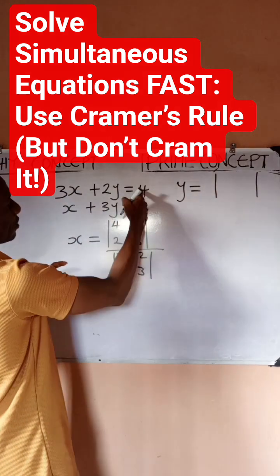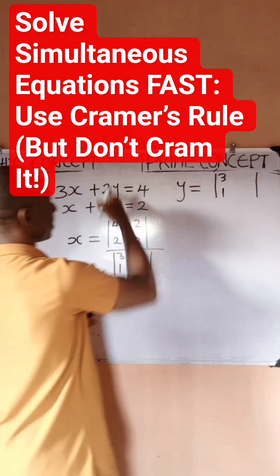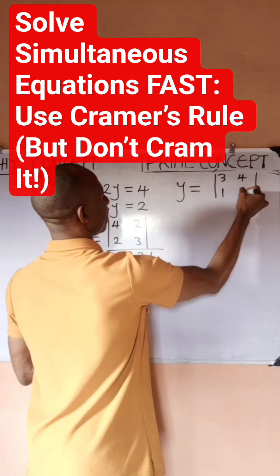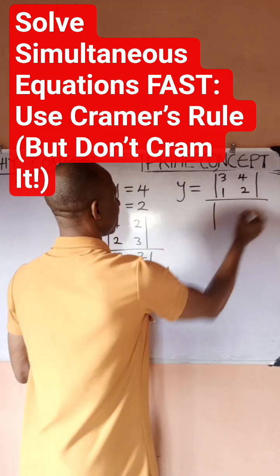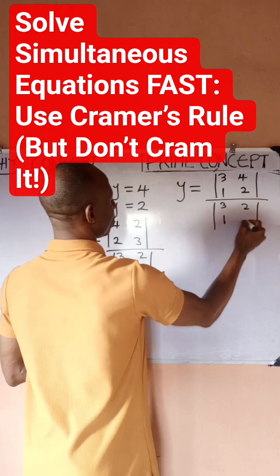I'm going to replace y this time around with this, so I'll have 3, 1, and I'm replacing y which is going to be 4 and 2, all over the determinant of this which is 3, 1, 2, 3.